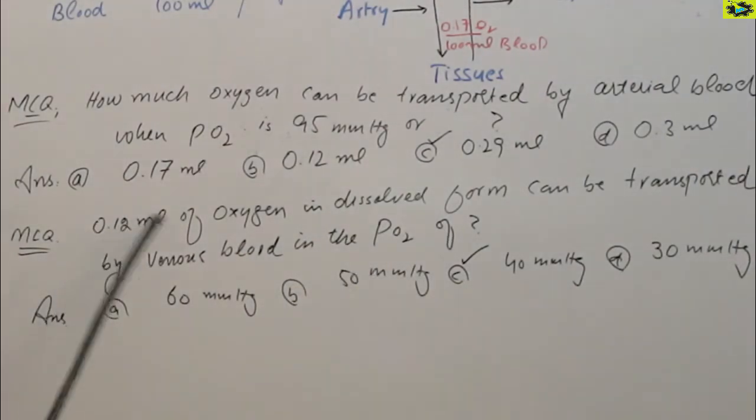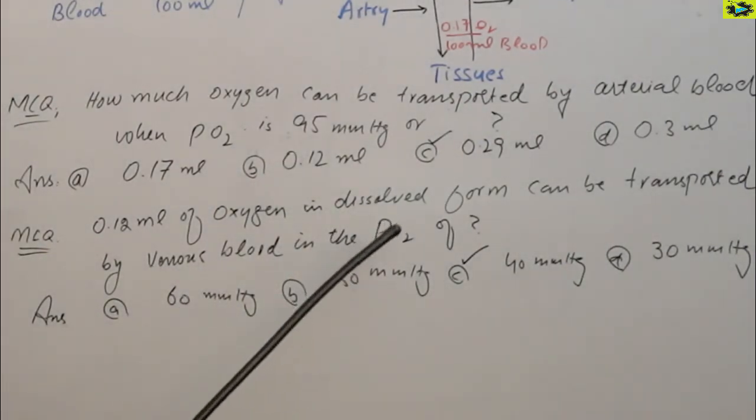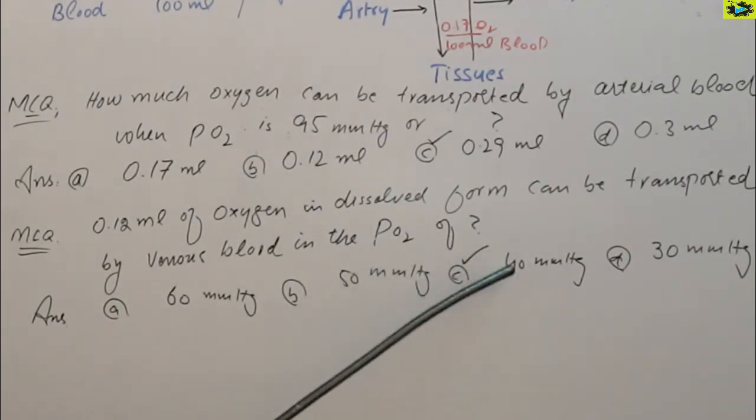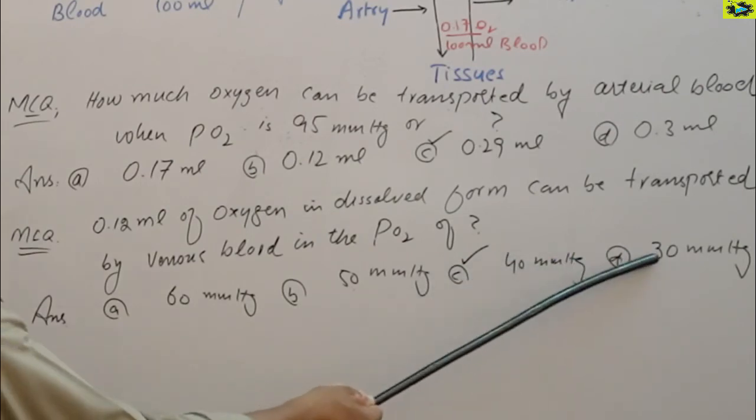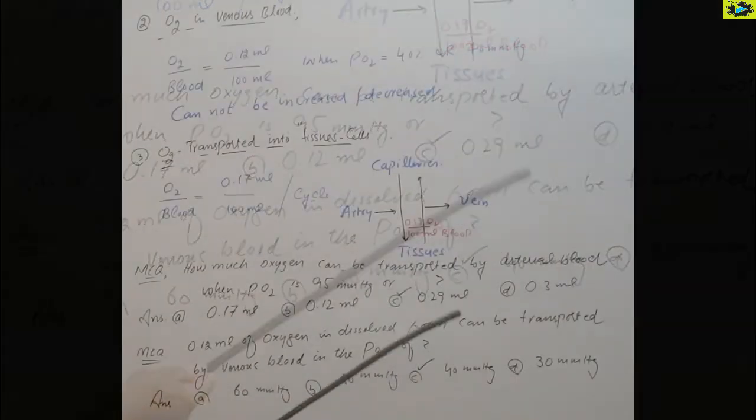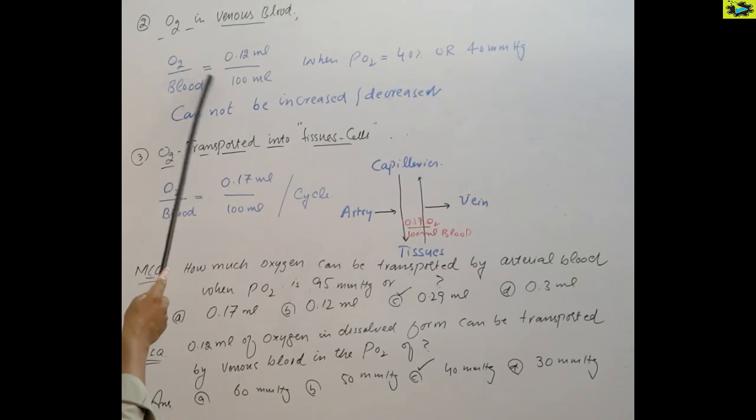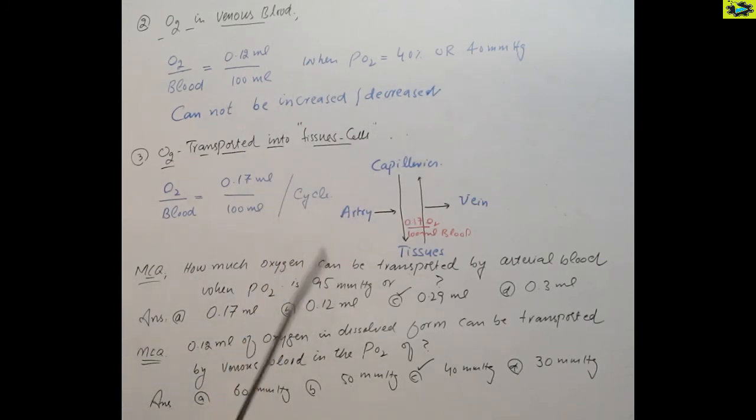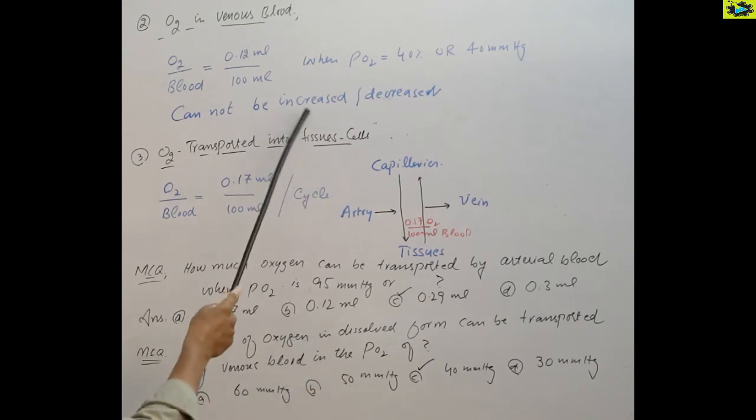0.12 ml of oxygen through plasma, this venous blood passes at what partial pressure? 60 mm of mercury, 50 mm of mercury, 40 mm of mercury, or 30 mm of mercury? The correct answer is 40 mm of mercury. This is the venous blood, when oxygen passes through the plasma, otherwise no increase or decrease is possible.